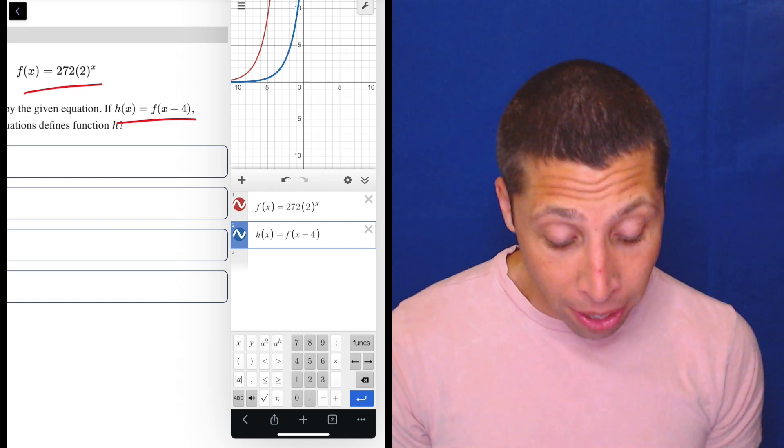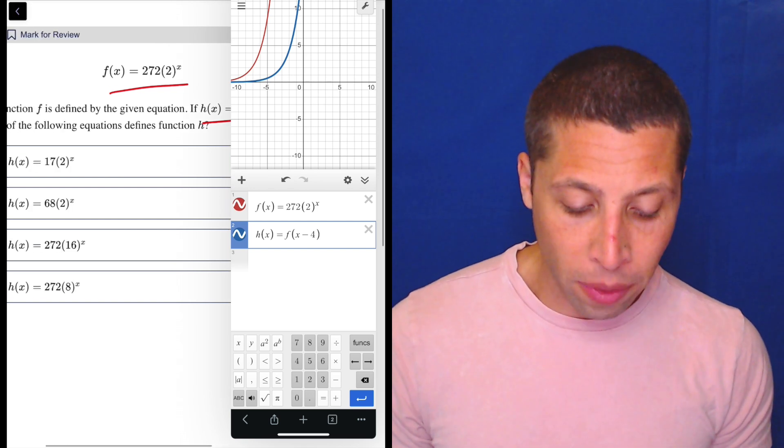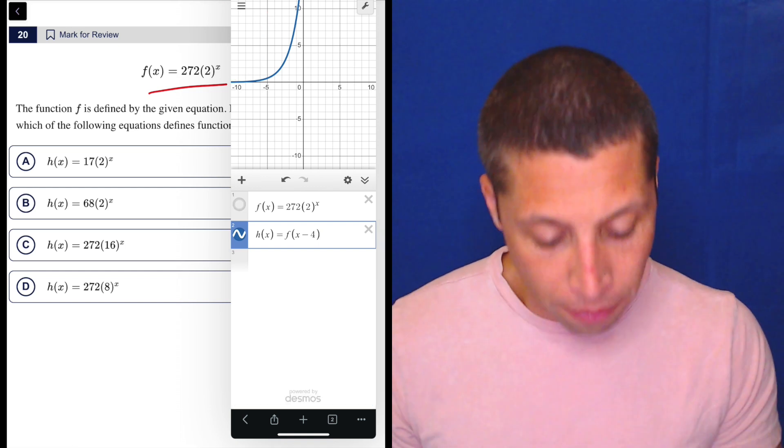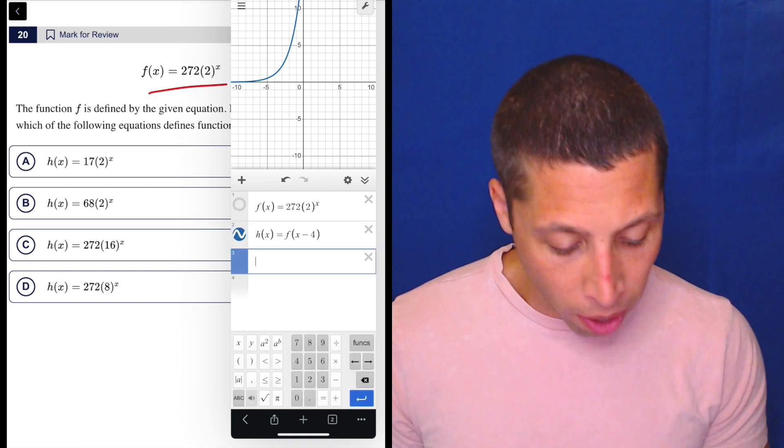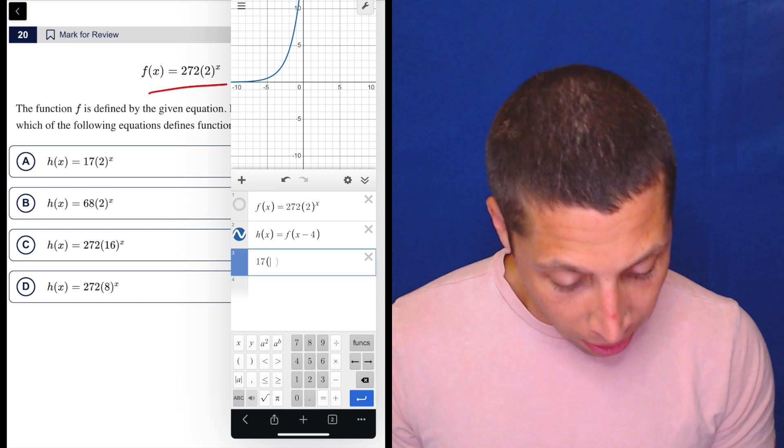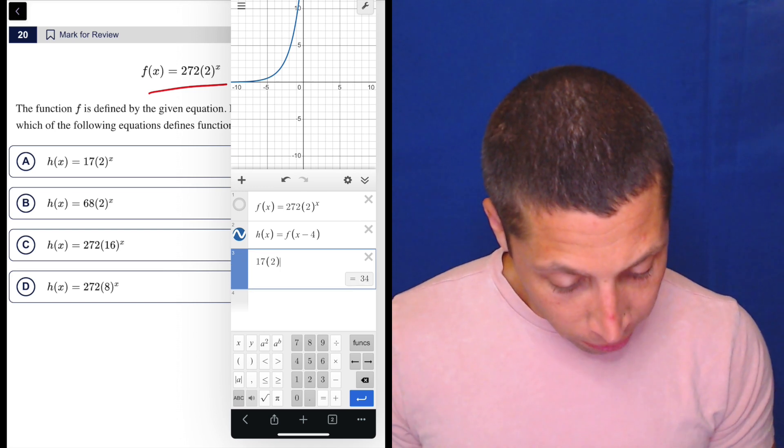Now we have proof of that, but that doesn't matter because I need to know which of them gives the equation for that h of x, right? So basically, I have four options. Let's turn off the f of x. I don't want that anymore. I'm just going to try these different things, and I'm just going to leave off the h of x part. Let's do 17 times 2 to the x.